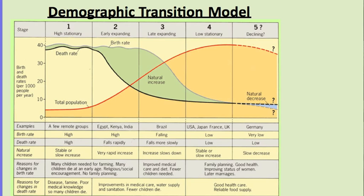Here is another helpful visual. You can see the gap between the birth rate and the death rate, which reflects the NIR and how the population is growing. For each of the stages, examples of countries are shown alongside what is characteristic of the birth rate, death rate, natural increase rate, and the reasons for each of these changes — including a specific look at death within the different stages.